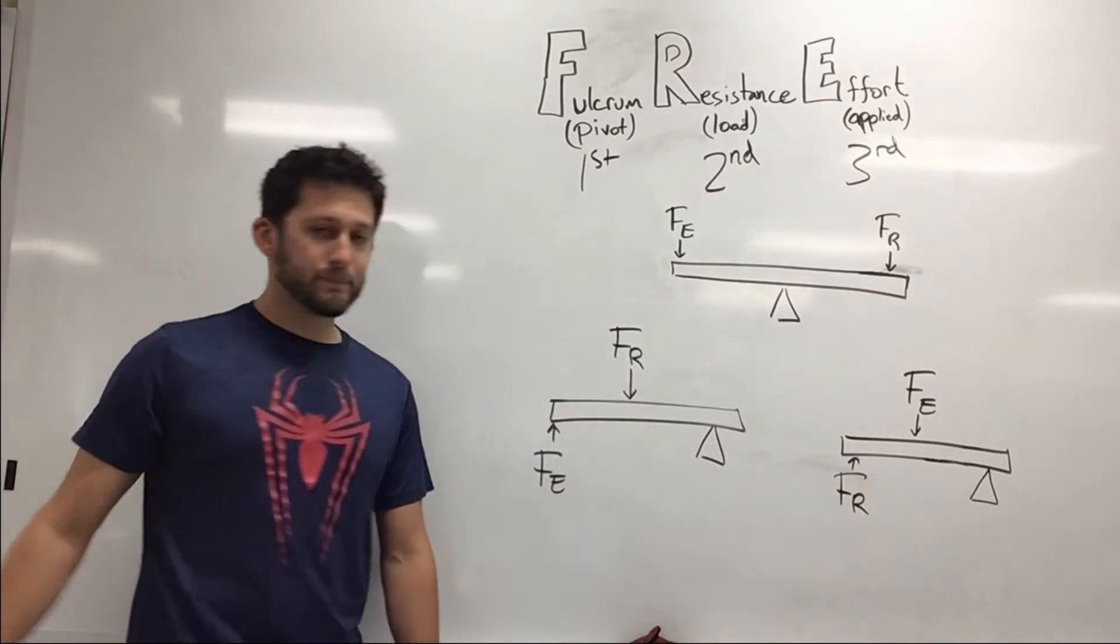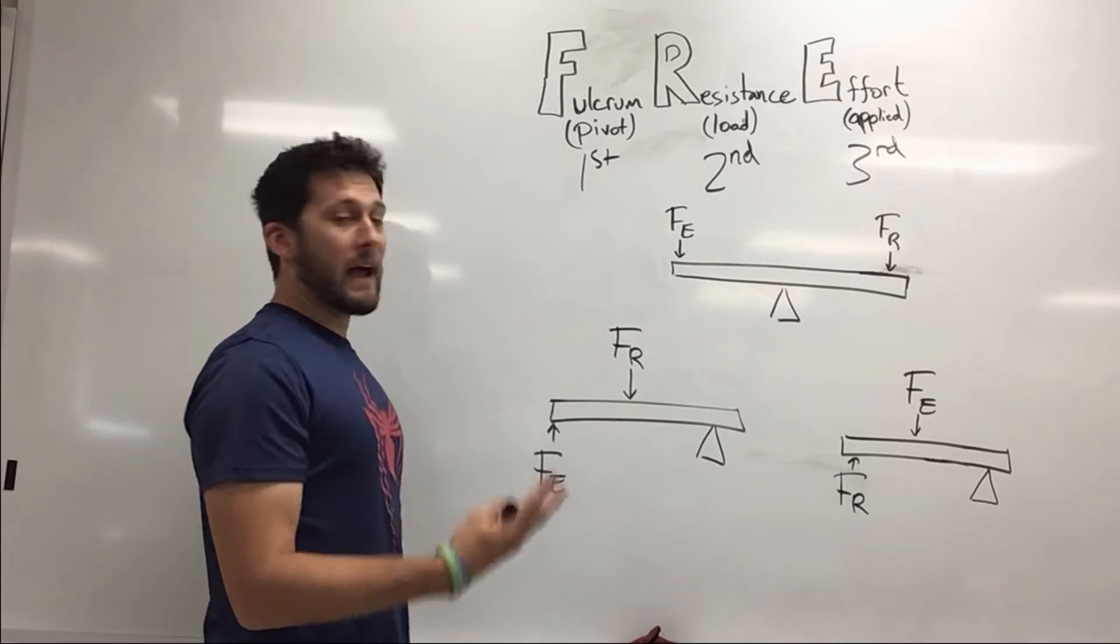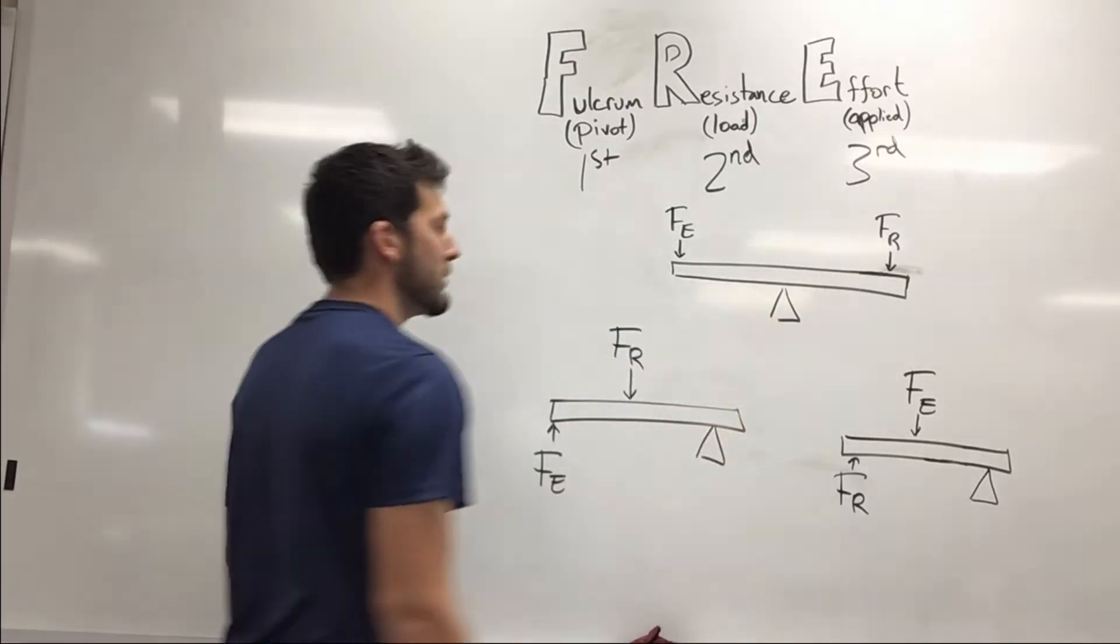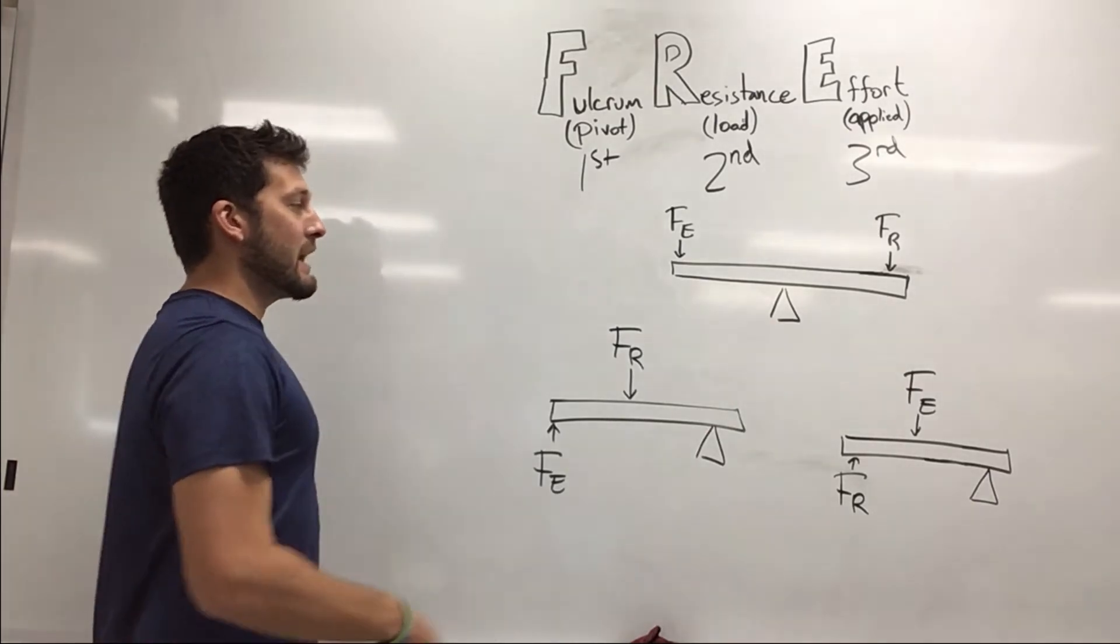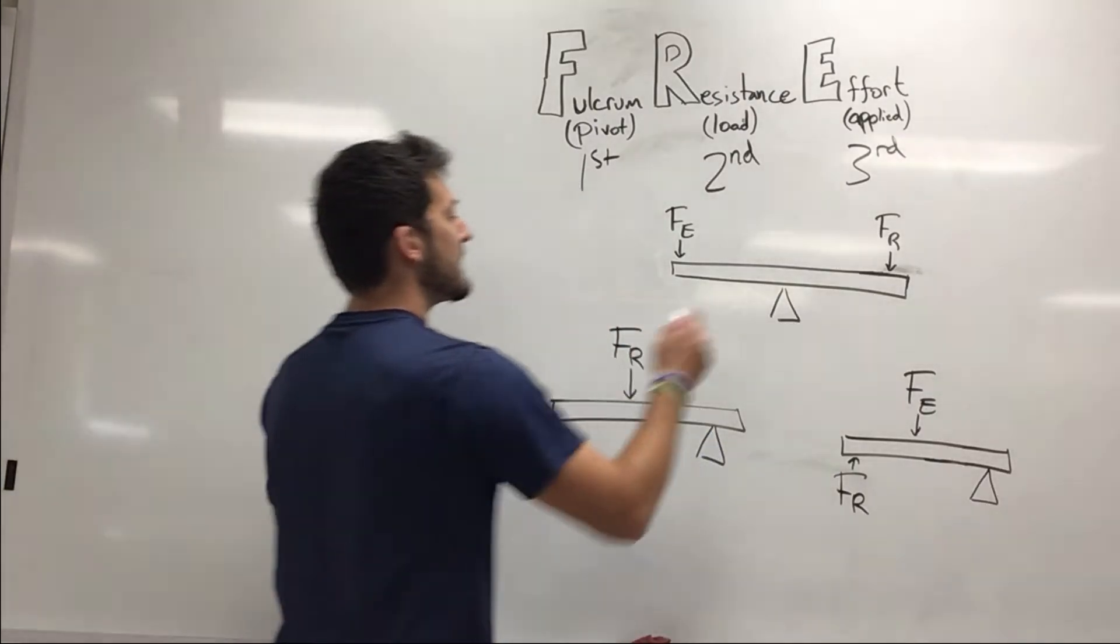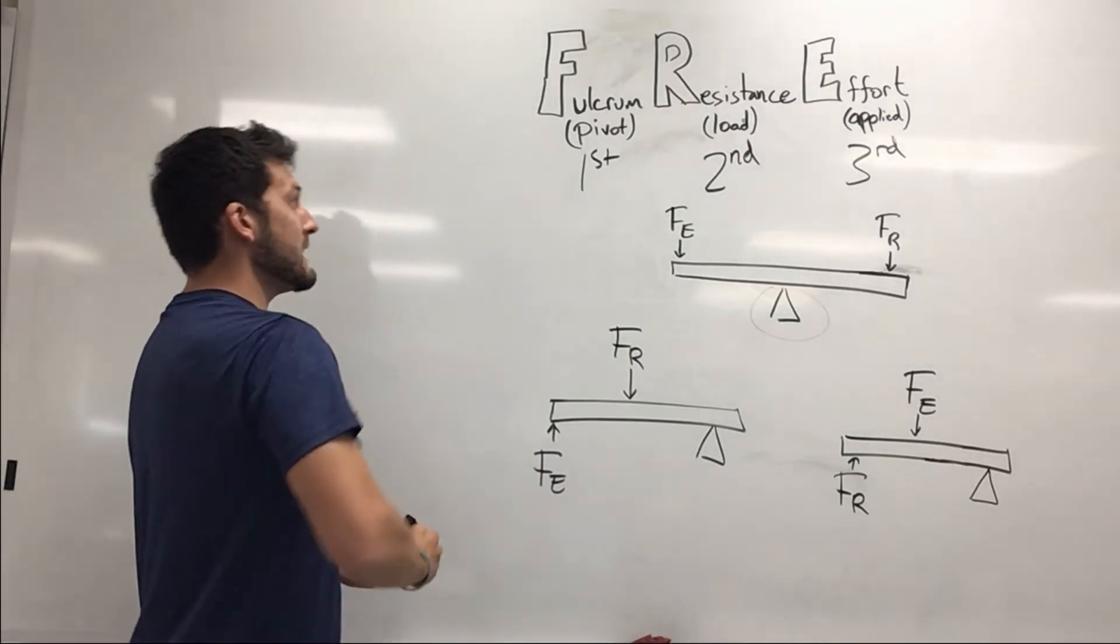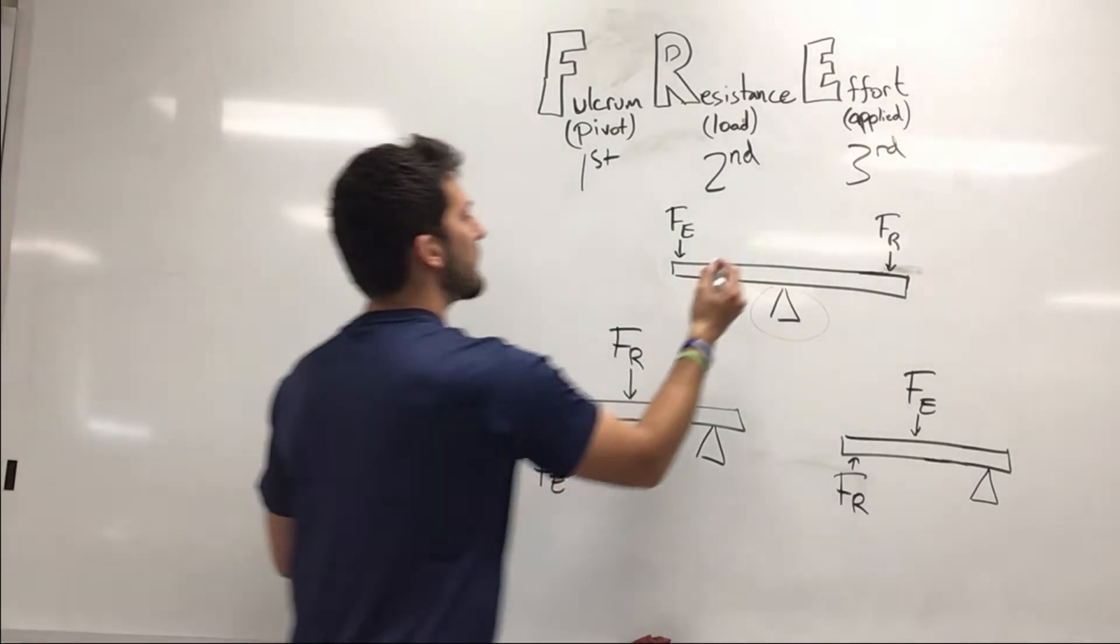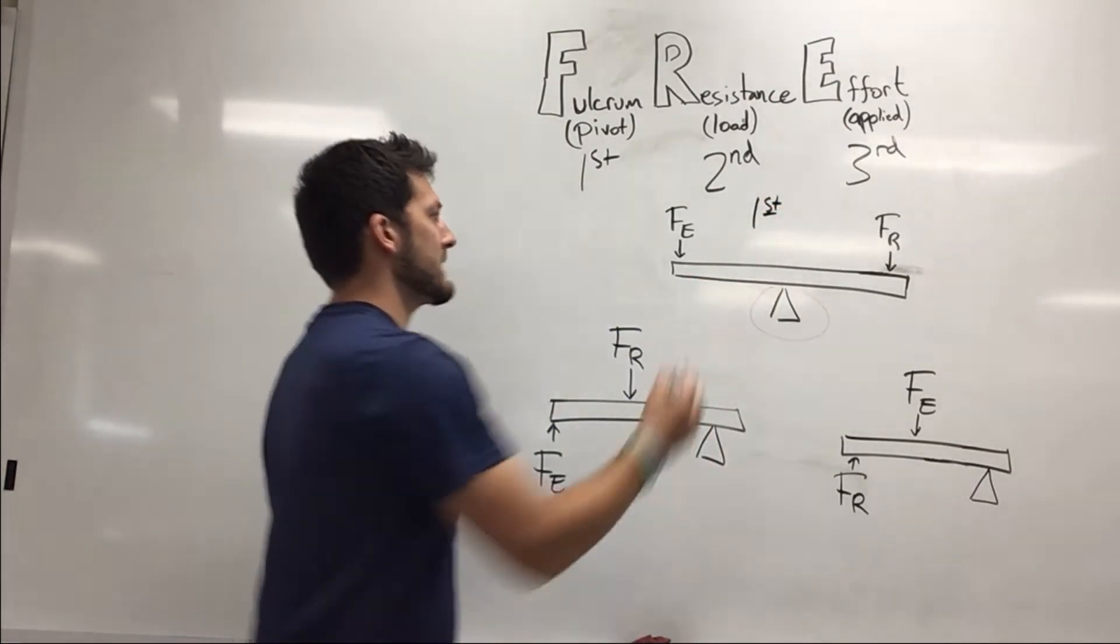And let's look at this first one right here. So we see we have our effort force, our applied force, we have our fulcrum or our pivot, and we have our resistance force. So to determine what class of lever that is, if we identify the item that's in the middle, in our case is the fulcrum, all we have to do is look up, say fulcrum correlates to our first class lever, which makes this guy an example of a first class lever.